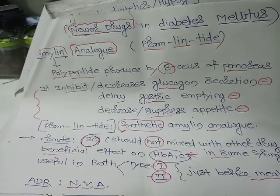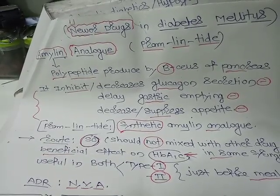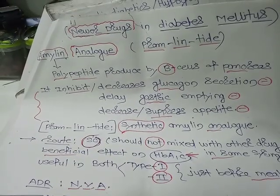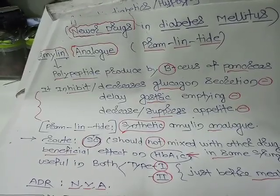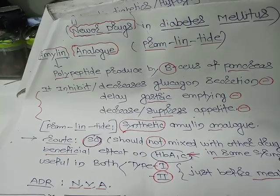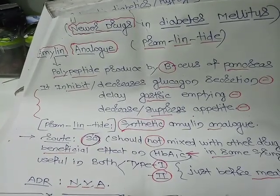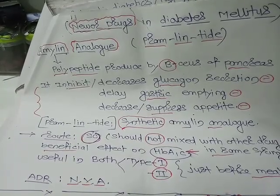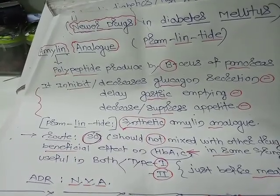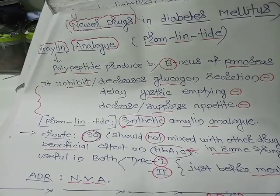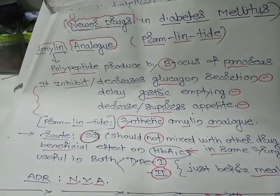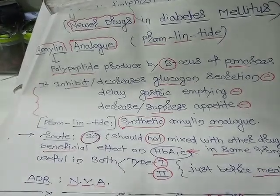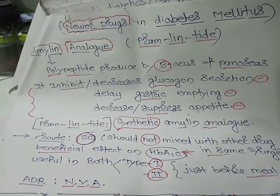We cannot use amylin directly as a drug, so we use its analog in the form of pramlintide — the synthetic amylin analog. Pramlintide is administered via the subcutaneous route.